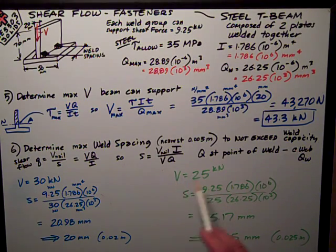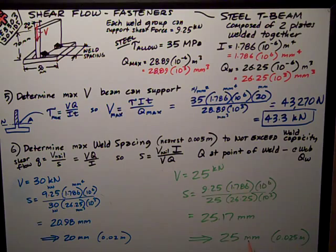The green test I was given the shear is 25 kilonewtons. Plugging those numbers into the formula, I get 25.17 millimeters. Once again, I have to reduce that to the nearest 5 millimeter point, which is 25 millimeters, or 0.025 meters.